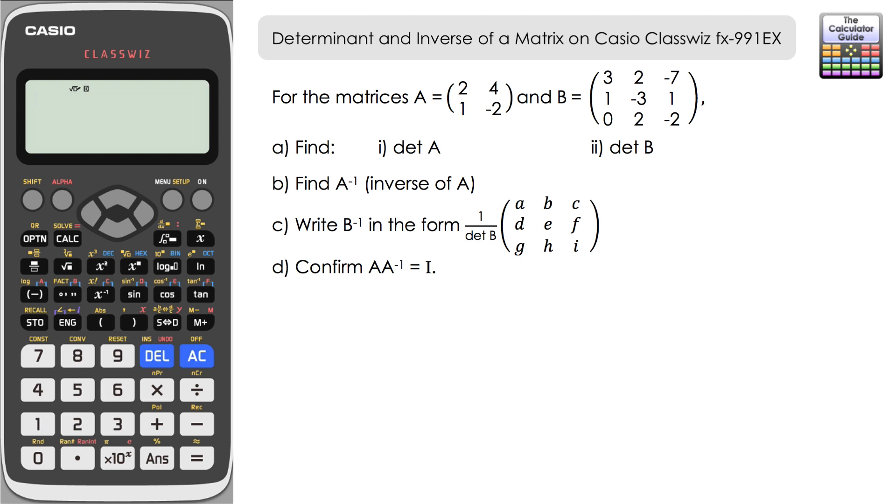We have to firstly find the determinants of both A and B. Then find the inverse of A and we'll give the inverse as the calculator presents it.